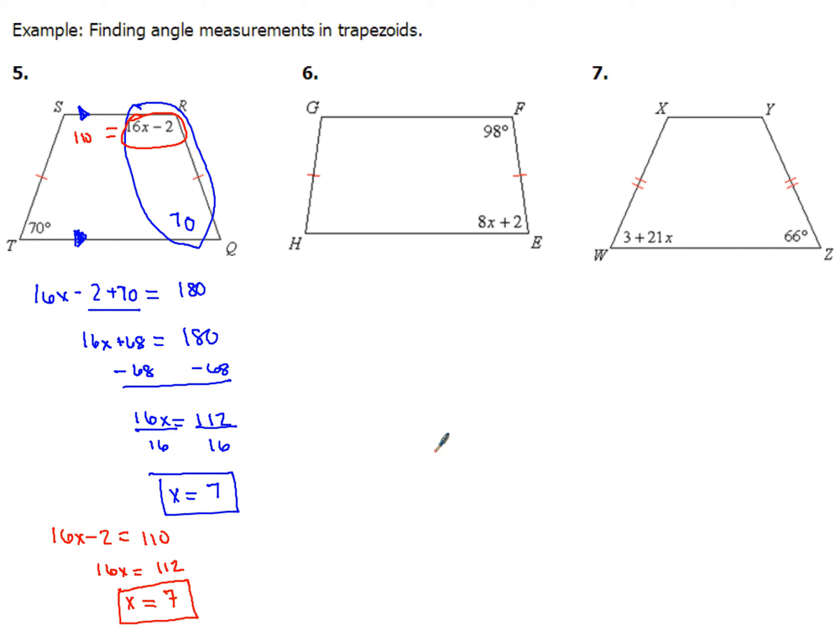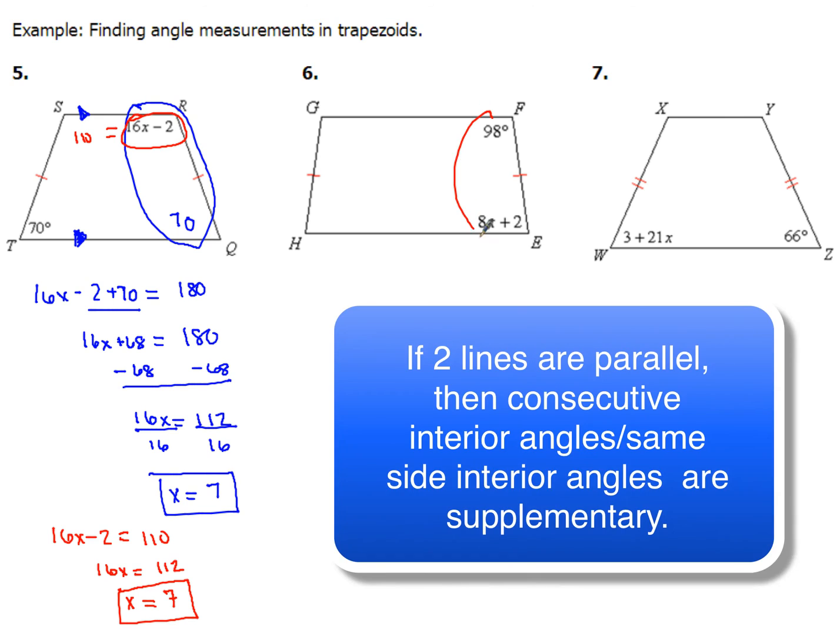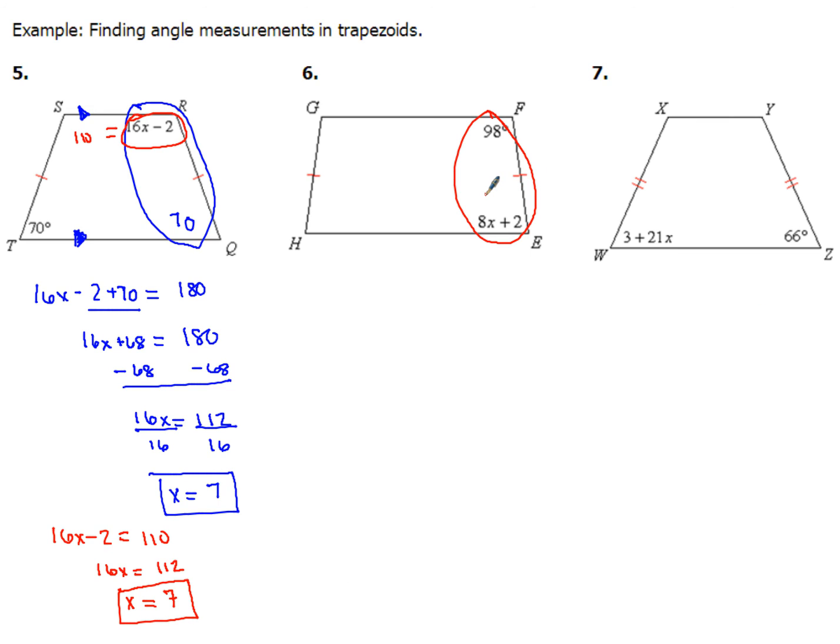Now with that said, I think you guys can go ahead and do number 6 totally on your own, because these two angles have a sum of what? Yeah, that's right, you know it. They add up to 180. So go ahead and write an equation and figure out what that value for x is.